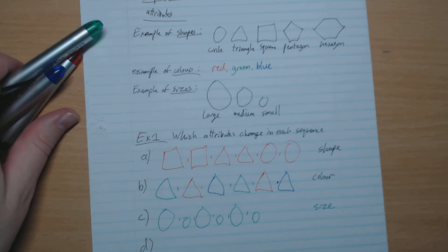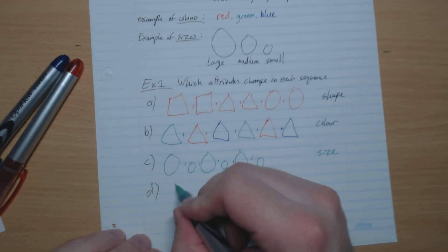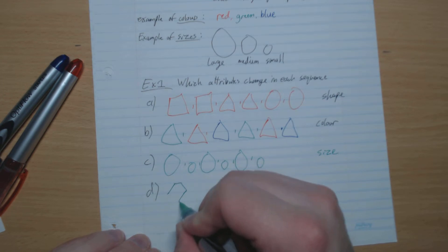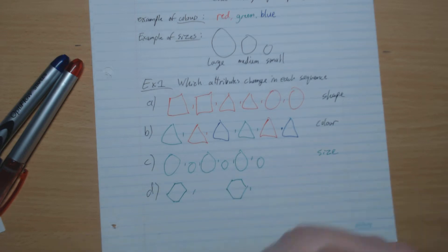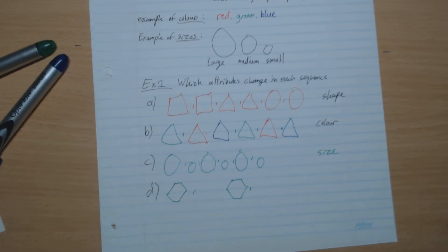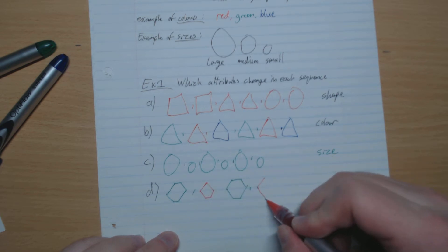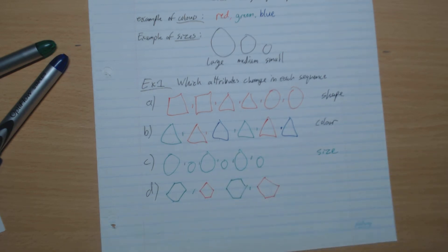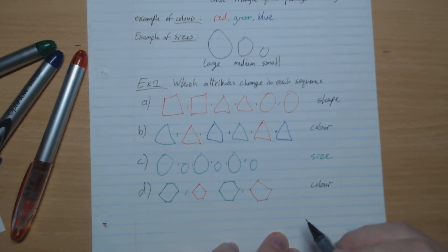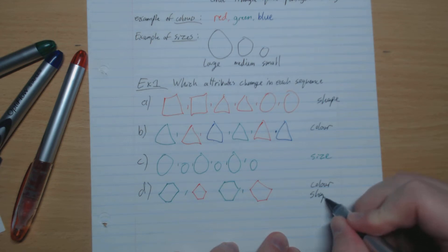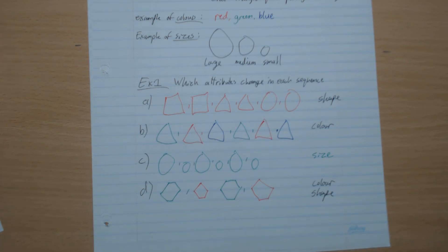What's changing here? We have the color that's changing and the shape — going from hexagon, pentagon, hexagon, pentagon. Excellent. Let's do some practice.